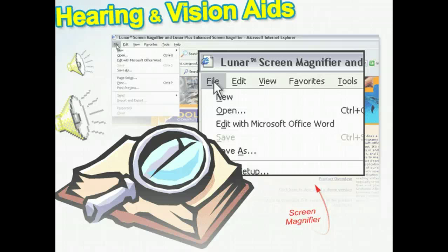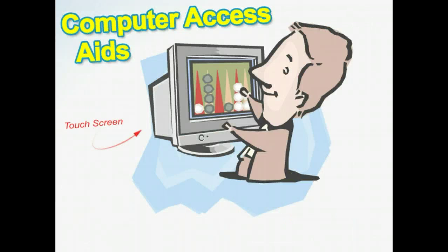Hearing and vision aids are products designed to assist hearing or visually impaired individuals. They include visual or tactile alerting systems, various amplification systems, screen readers, braille printers, and screen magnifiers. For instance, if you have students with significant vision problems, screen magnifiers or screen readers could make a remarkable difference when they use computers.